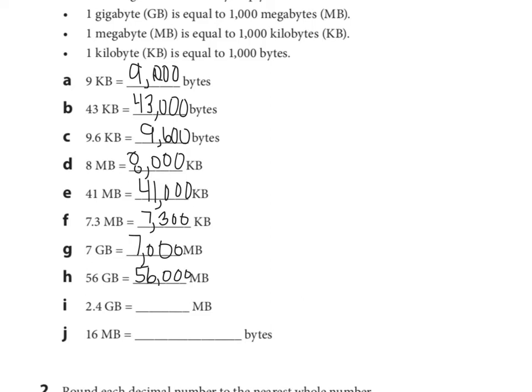Again, from gigabytes to megabytes, so multiplying by 1,000. 2 gigabytes would be 2,000 megabytes. The 4 tenths would be how many megabytes? 400. So, we have 2,400 as our answer.